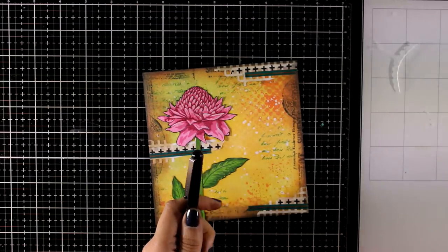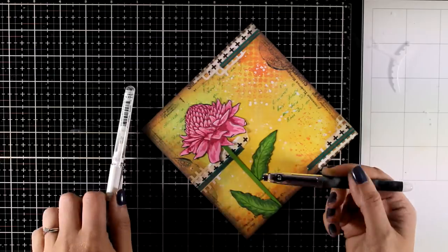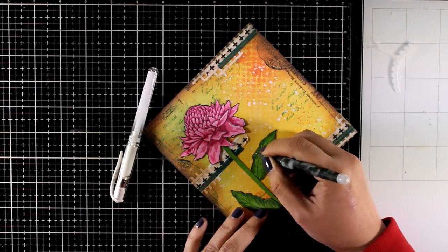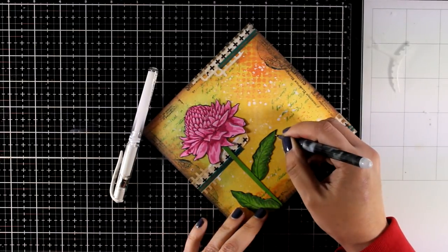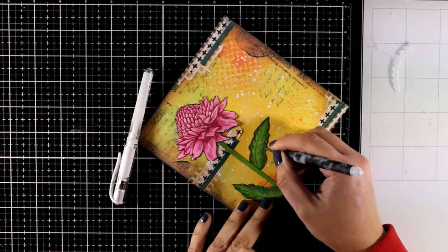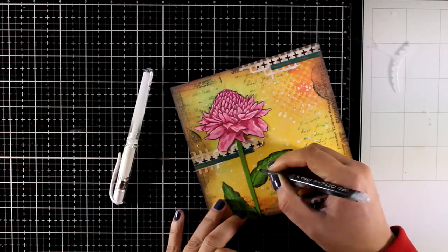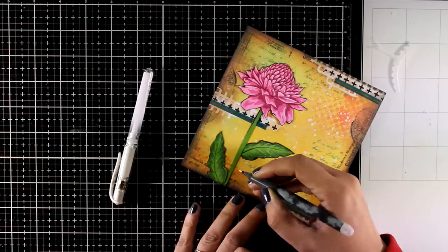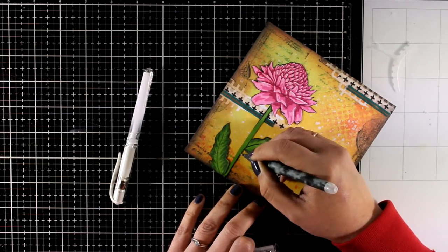For my favorite technique, I'm bringing in my white gel pen and a very thin black marker, and I'm going to go all around the cutouts adding some sketchy lines. These black lines will help all those cutouts stand out against the background.